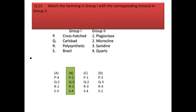Next question: match the twinning in group 1 with their corresponding mineral in group 2. Crosshatch twinning is shown by microcline. Carlsbad twinning by sanidine. Polysynthetic twinning is a characteristic feature of plagioclase. And Brazil twinning is shown by quartz. Our answer will be option B.